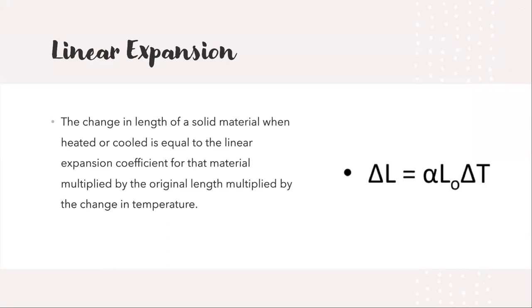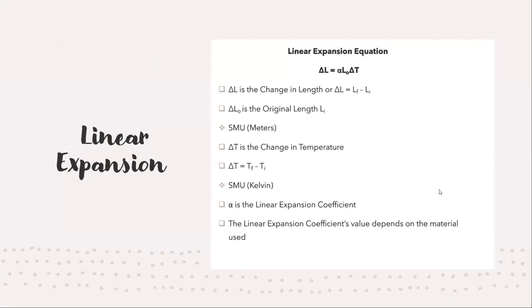Linear expansion is one of the first examples we will be discussing in this presentation. Linear expansion is described as the change in length of a solid material, delta L in the equation. When it is heated or cooled, this is equal to the linear expansion coefficient for that material. The expansion coefficient can be found in the table Guadalupe, where the chart Guadalupe showed in her slides. And whenever that coefficient is multiplied by the original length, which is the alpha L zero, times the change in temperature, you get the linear expansion of the material.